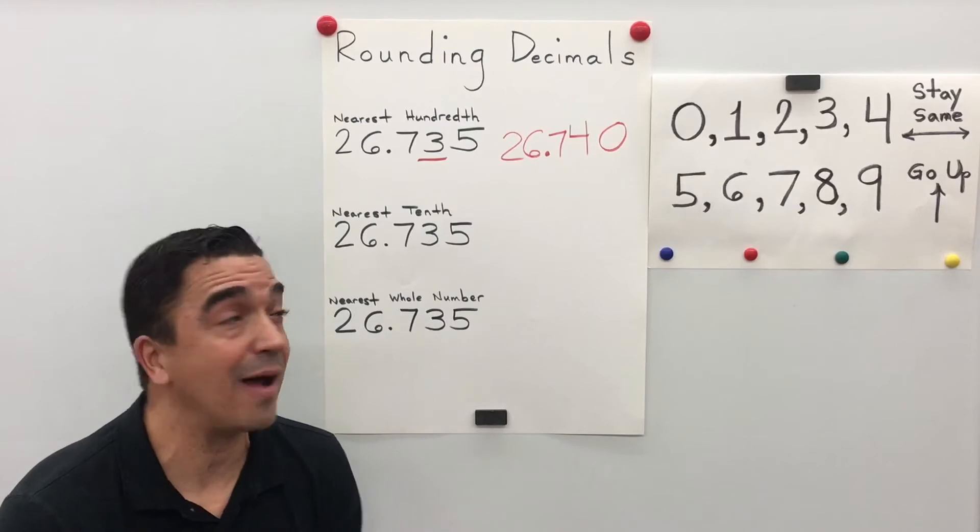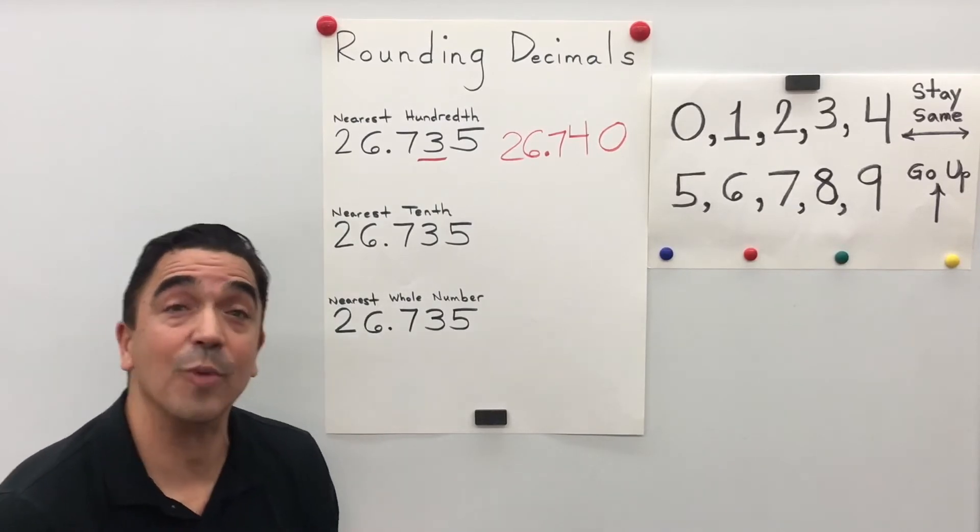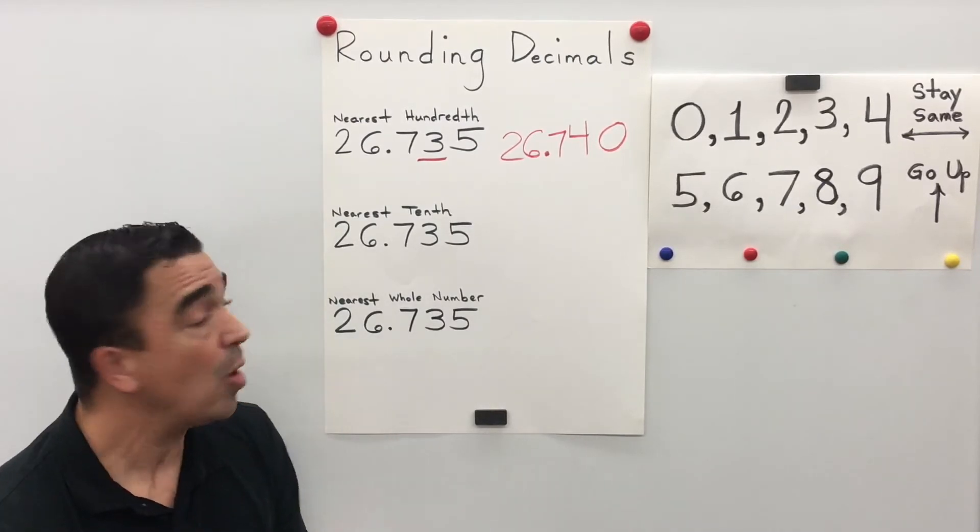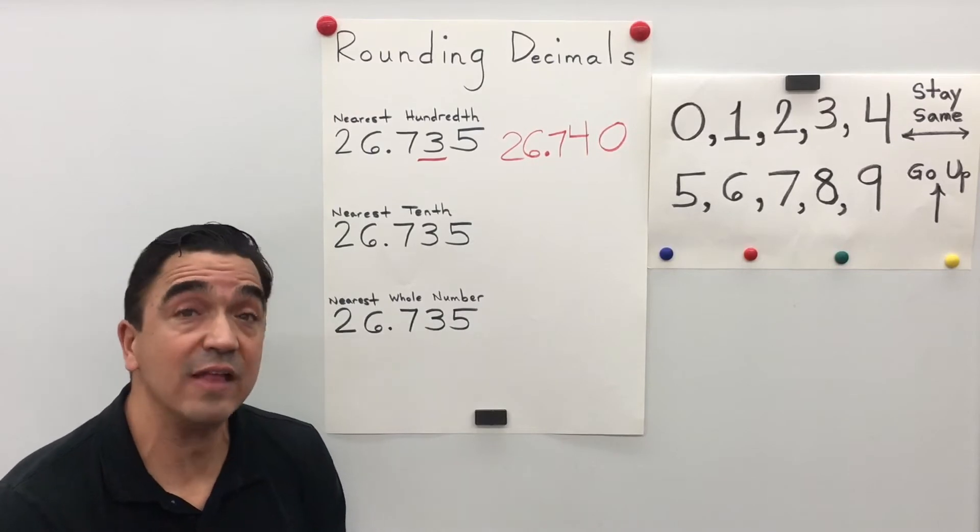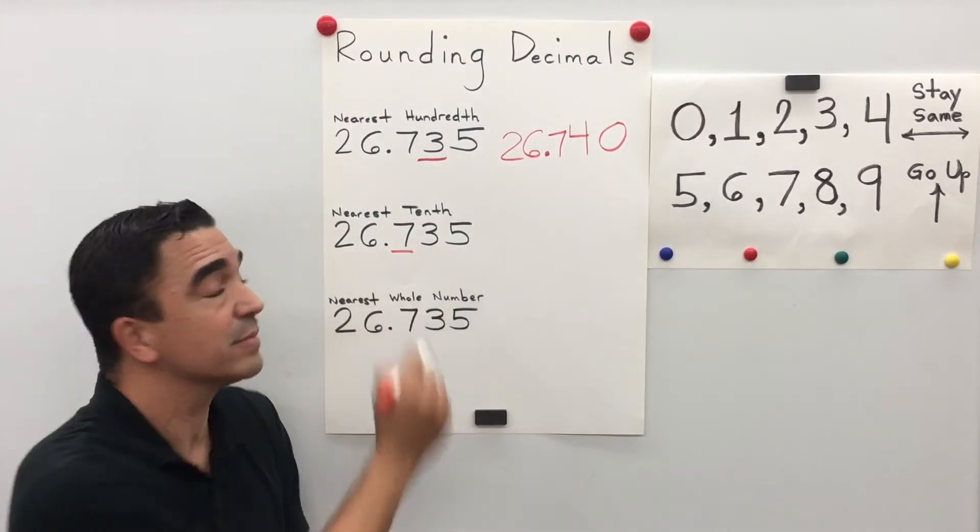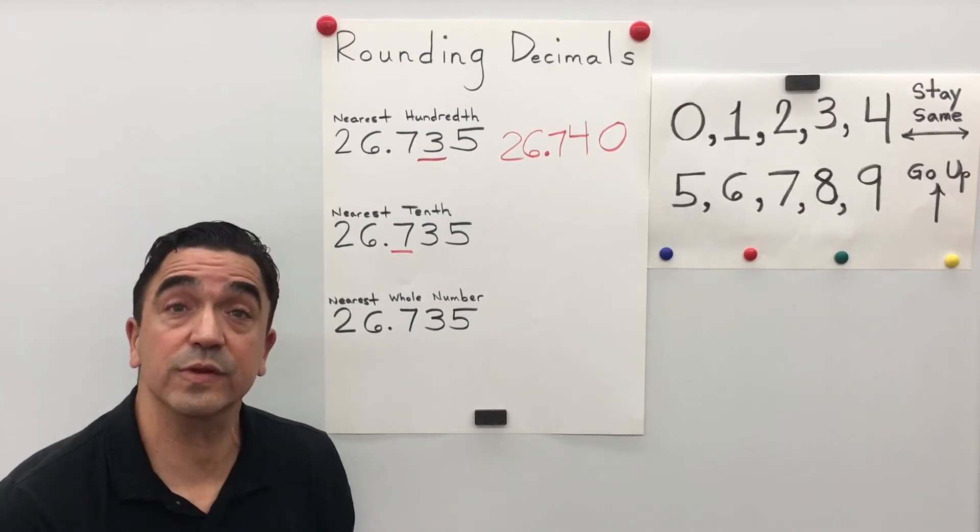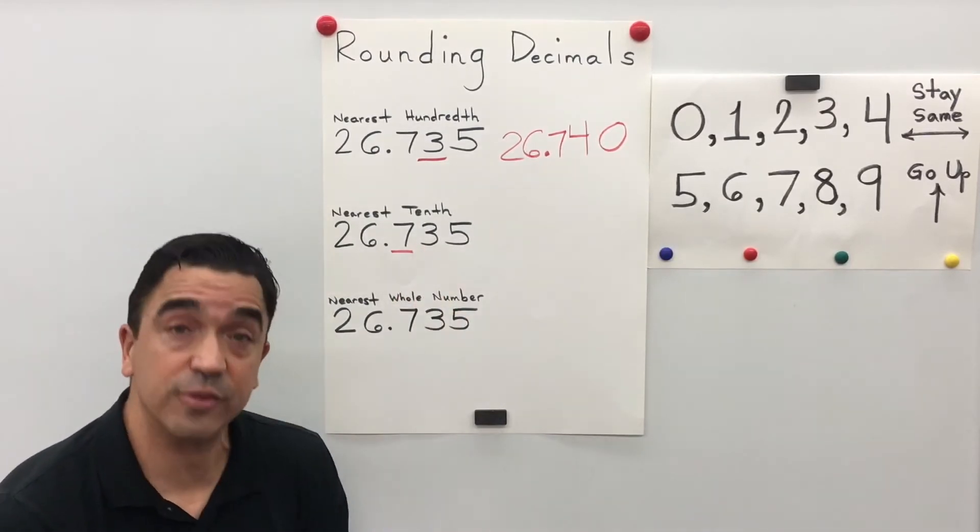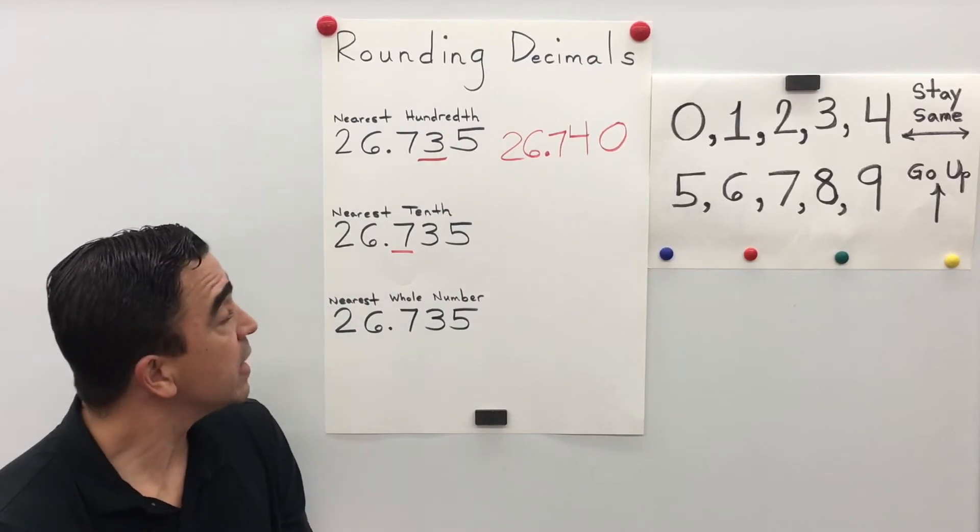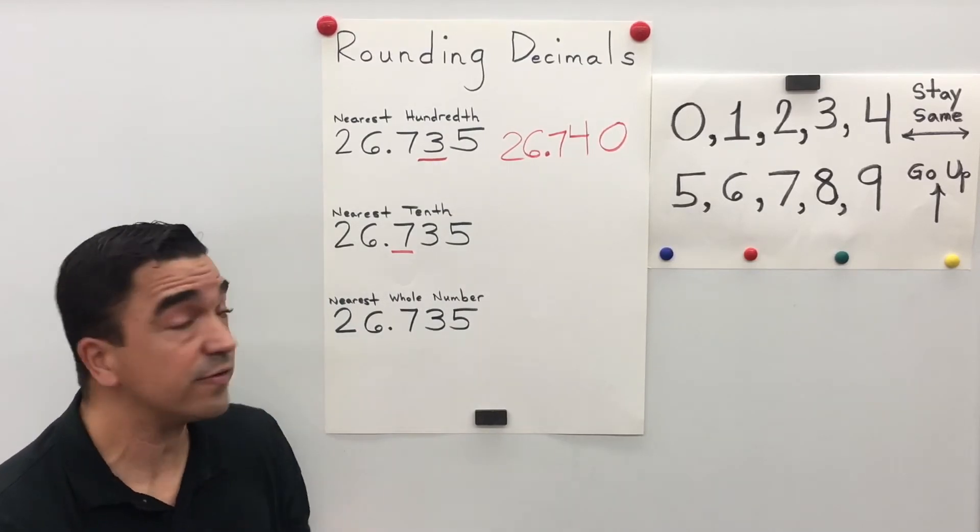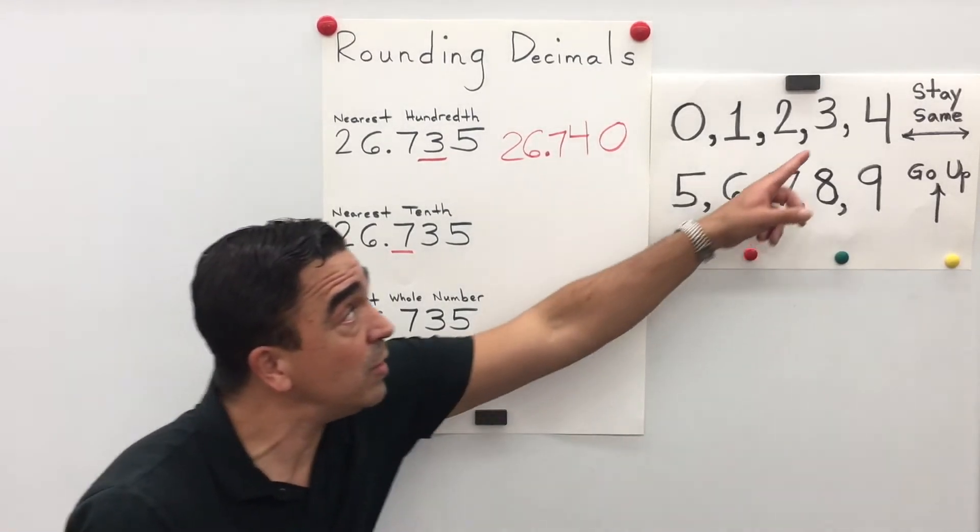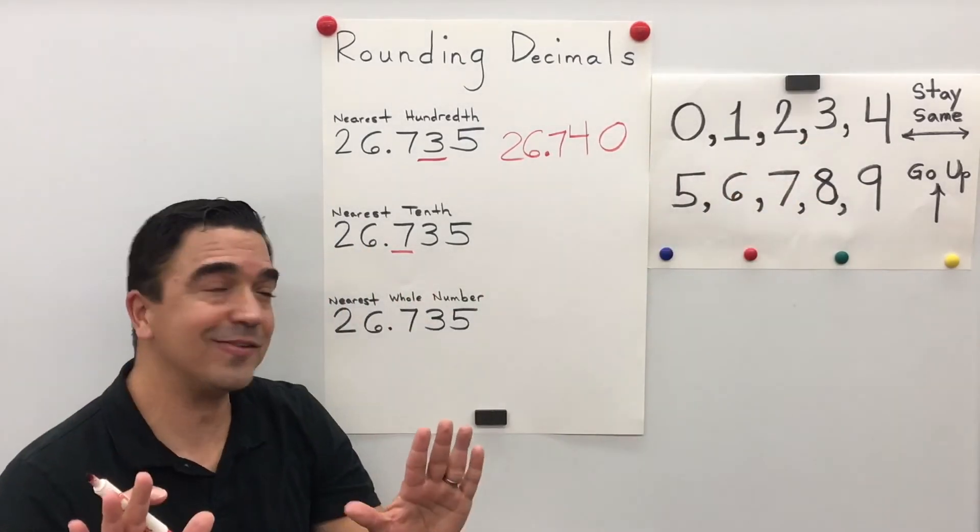Let's do the second problem. We're rounding to the nearest tenth. So we have to find the digit in the tenths place. It's seven. Who's going to tell the seven what to do? The three in the hundredths. And the three is going to tell the seven to stay the same.